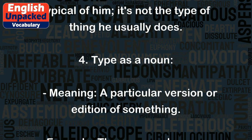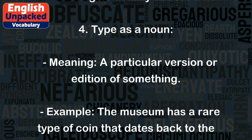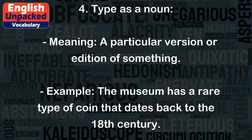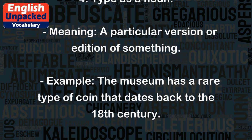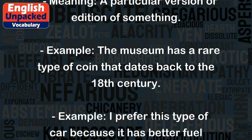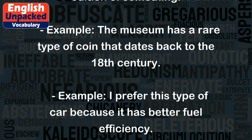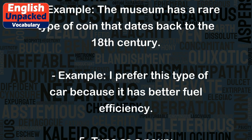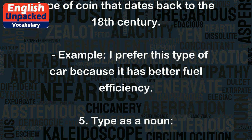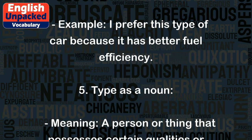4. Type as a noun, meaning a particular version or edition of something. Example: the museum has a rare type of coin that dates back to the 18th century. Example: I prefer this type of car because it has better fuel efficiency.